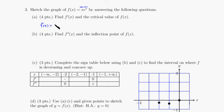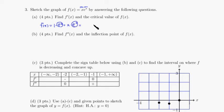The derivative of x is 1, times the second which is e to the x, plus the first, x, times the derivative of e to the x which is e to the x again. So e to the x is common in both terms, so we can factor it out. You have e to the x times (1 plus x). That's the first derivative, f prime of x.